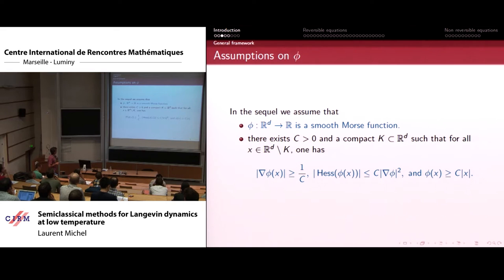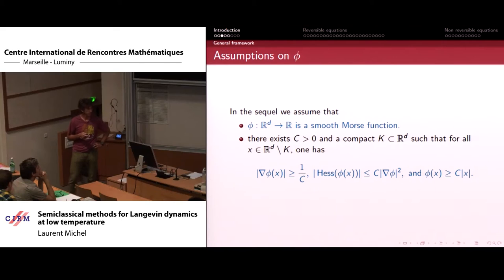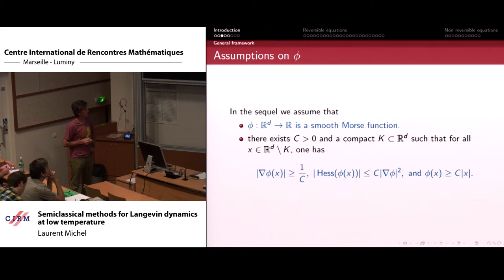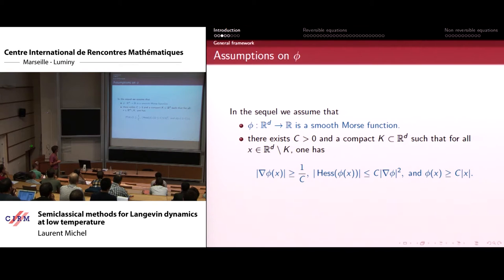The assumptions I make on phi are the following. I suppose that phi is a Morse function, so that it is non-degenerate at critical points, and I assume some confining hypotheses: the gradient of phi is bounded from below by a constant at infinity, phi is large at infinity outside a compact set, and the Hessian of phi is controlled by the square of the gradient. All these assumptions are satisfied by functions which are sub-quadratic at infinity.